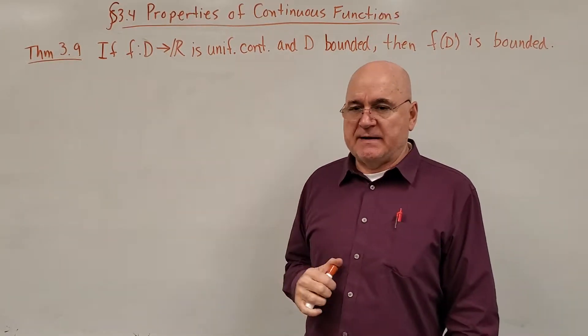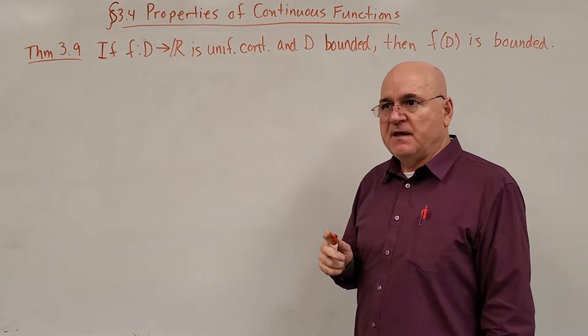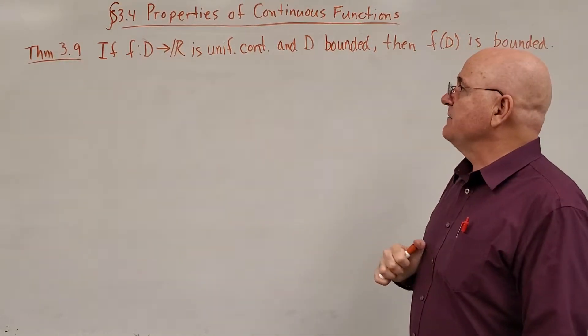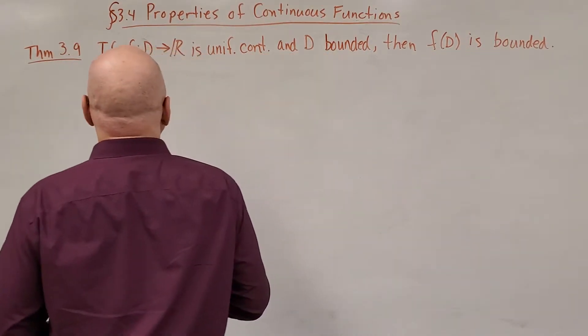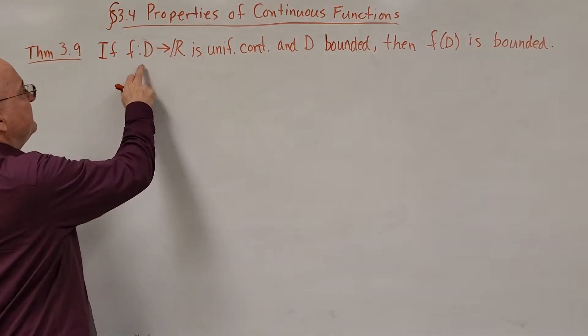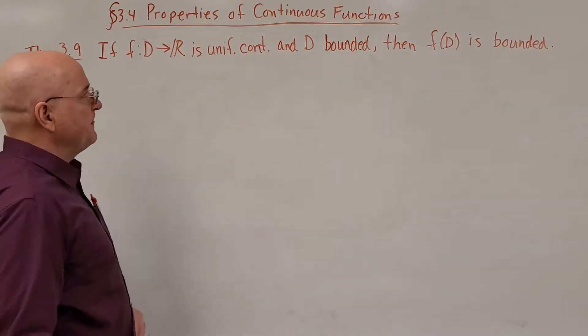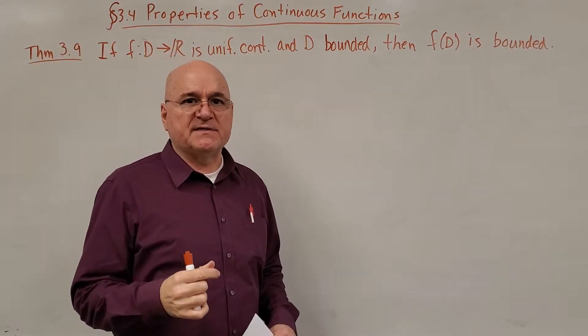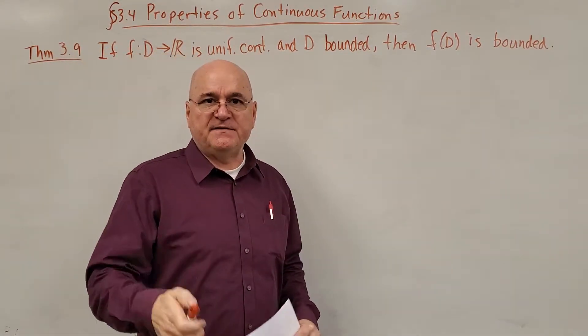Now for the last section in Chapter 3, we're going to talk about properties of continuous functions. And the first theorem we're going to look at is very simple. It says that if f mapping the domain into the real numbers, domain being capital D, if it is uniformly continuous and if D is bounded, then f(D) is bounded.